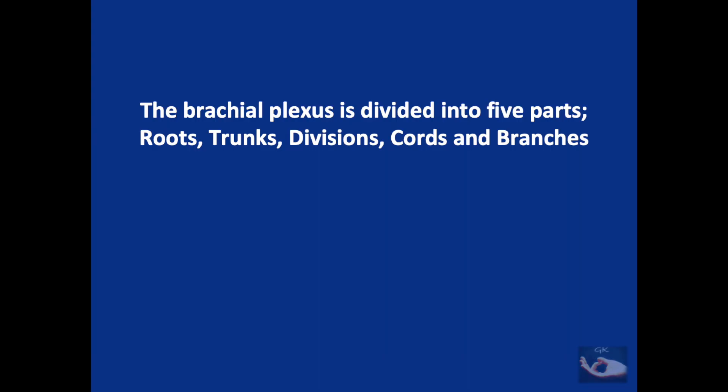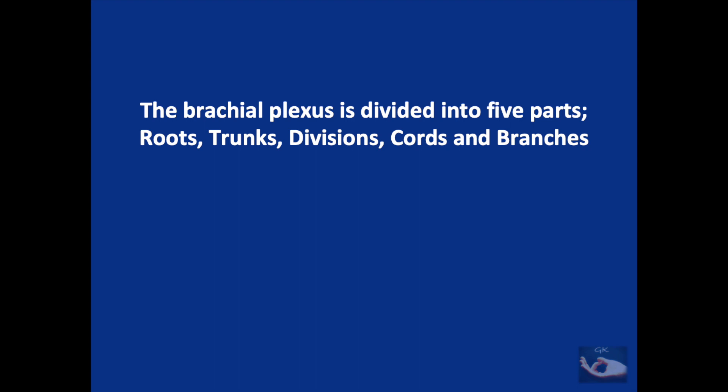The brachial plexus is divided into five parts: roots, trunks, divisions, cords, and branches. A good mnemonic for this is: 'Read That Damn Cadaver Book.'